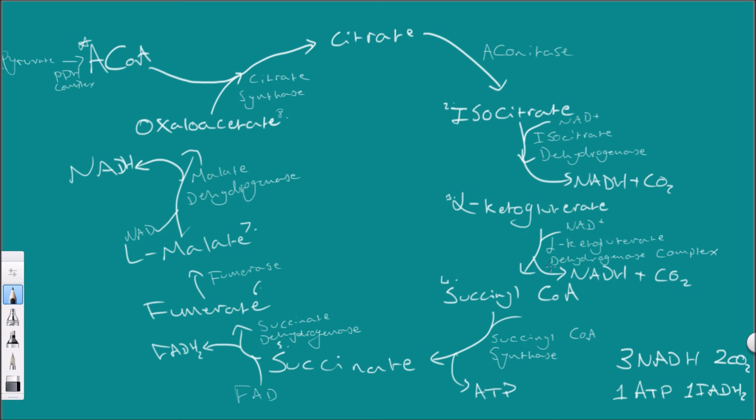This isocitrate then forms NADH and CO2 as it's been dehydrogenated to form alpha-ketoglutarate using the enzyme isocitrate dehydrogenase. The alpha-ketoglutarate will then lose another hydrogen and give it to the NADH plus a CO2 by the enzyme alpha-ketoglutarate dehydrogenase complex. It's a complex because there's more than one enzyme involved but it makes up one system to form a succinyl coenzyme A. Succinyl coenzyme A is converted to succinate producing an ATP by the enzyme succinyl coenzyme A synthase.